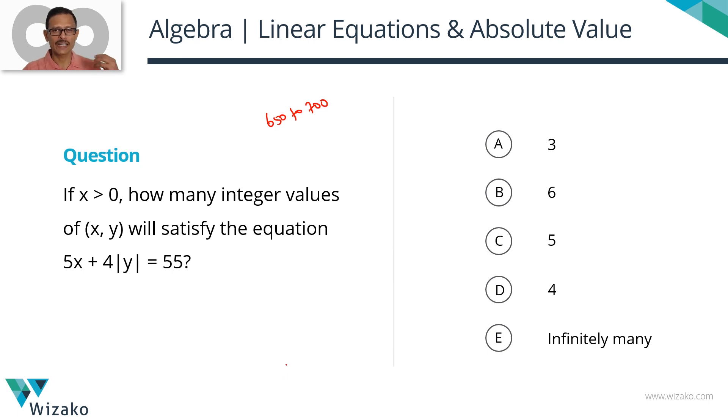Before we start solving, let's spend a minute understanding something unique about it. Invariably, we know that if you have two variables, we need to have two equations. That's a necessary condition, not a sufficient condition to get a unique value. We have only one equation. Obviously, that means we're not going to get a unique solution. That's why this question is asking how many values are possible. We are not trying to find a single solution.